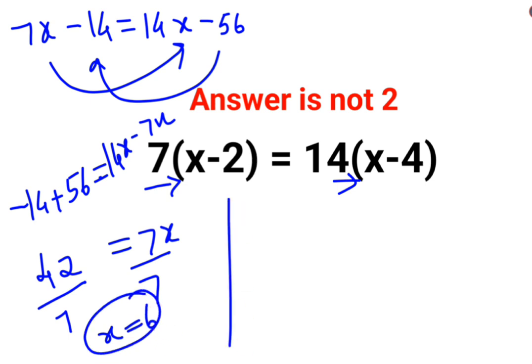Now, like I said, we can literally do this orally. I will just write the question one more time. So we have 7 multiplied by x minus 2 equals 14 multiplied by x minus 4. So first thing, we realize that 7 and 14 are getting multiplied to the bracket.